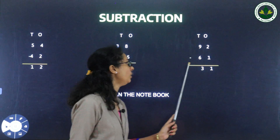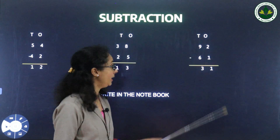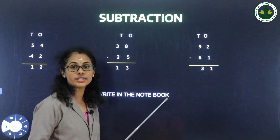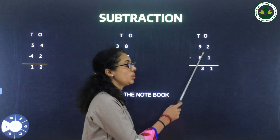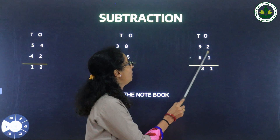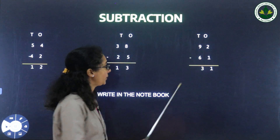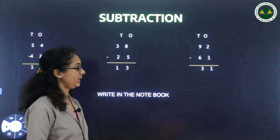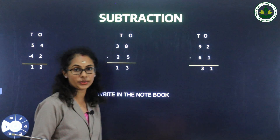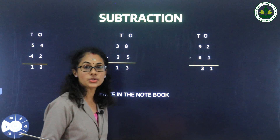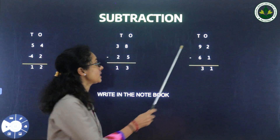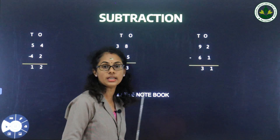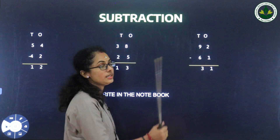Next one: 92 minus 61. Ones place: 2 and 1, so 2 minus 1 equals 1. Tens place: 9 minus 6 equals 3. Answer is 31.